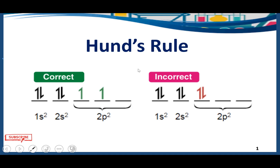Today we are talking about Hund's Rule. Hund's Rule was proposed in 1925 by a scientist named Friedrich Hund. Hund's Rule is majorly used in atomic chemistry. It is used in quantum chemistry and spectrochemistry also. And it is also very important to determine the ground state of an atom.